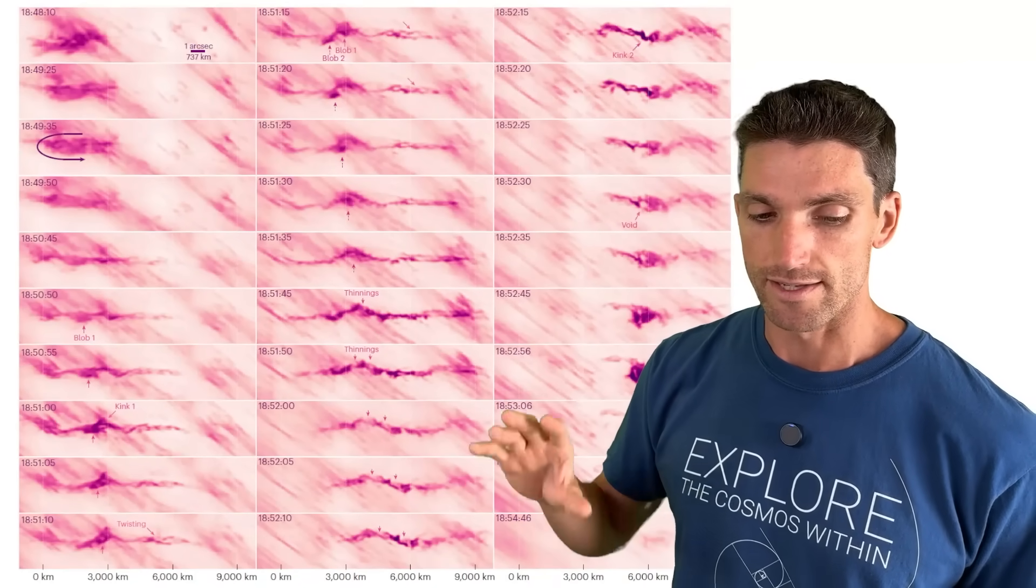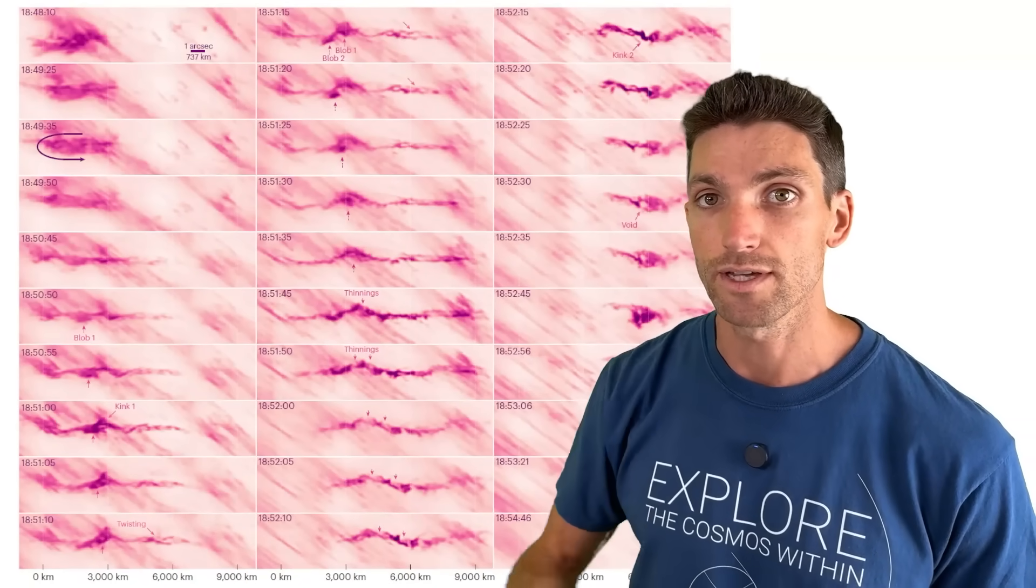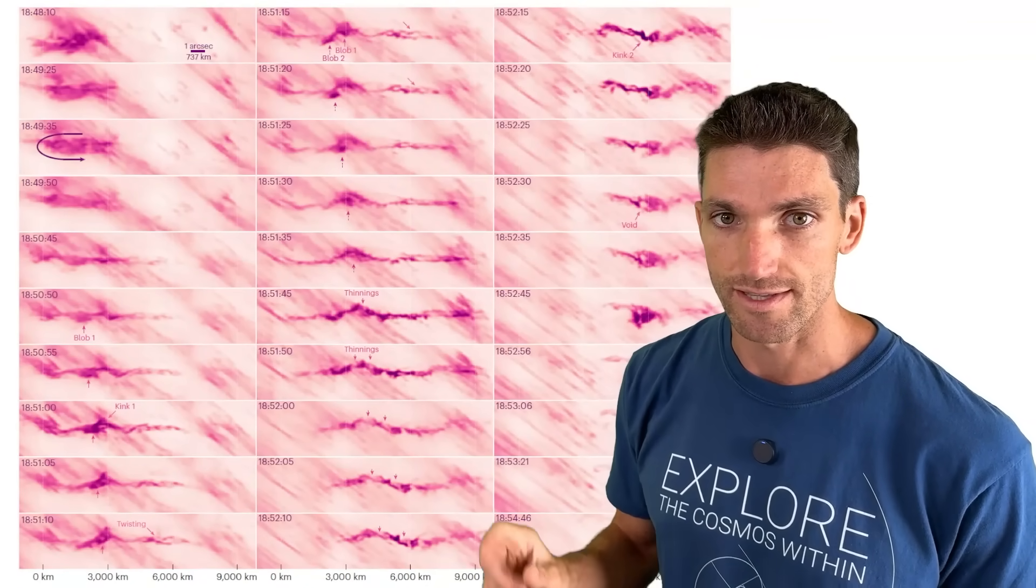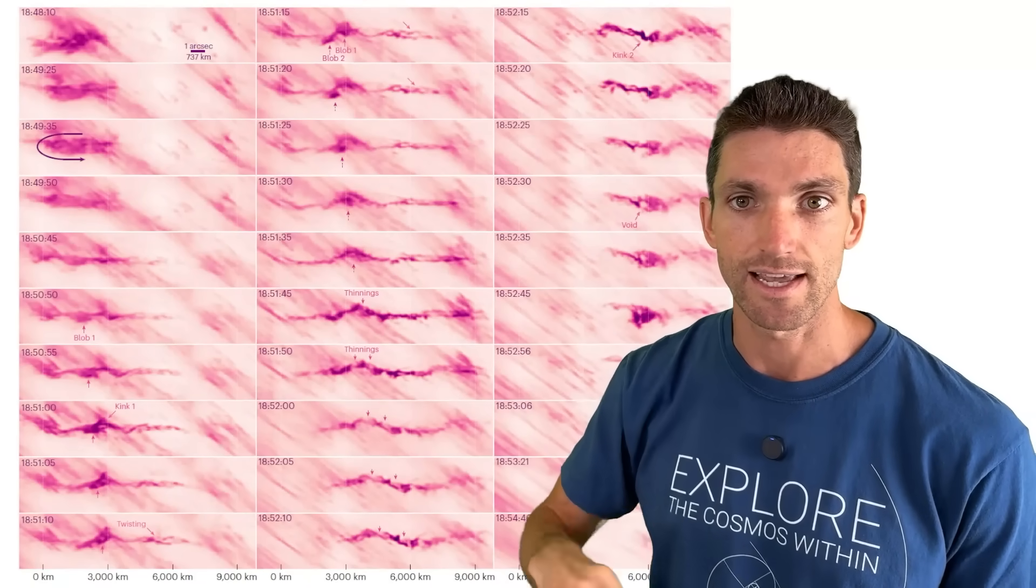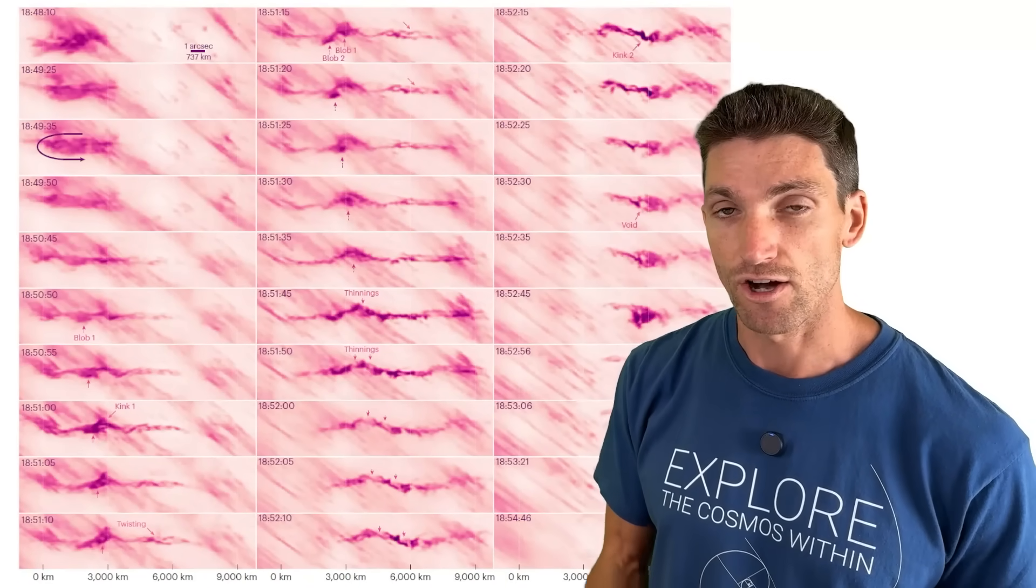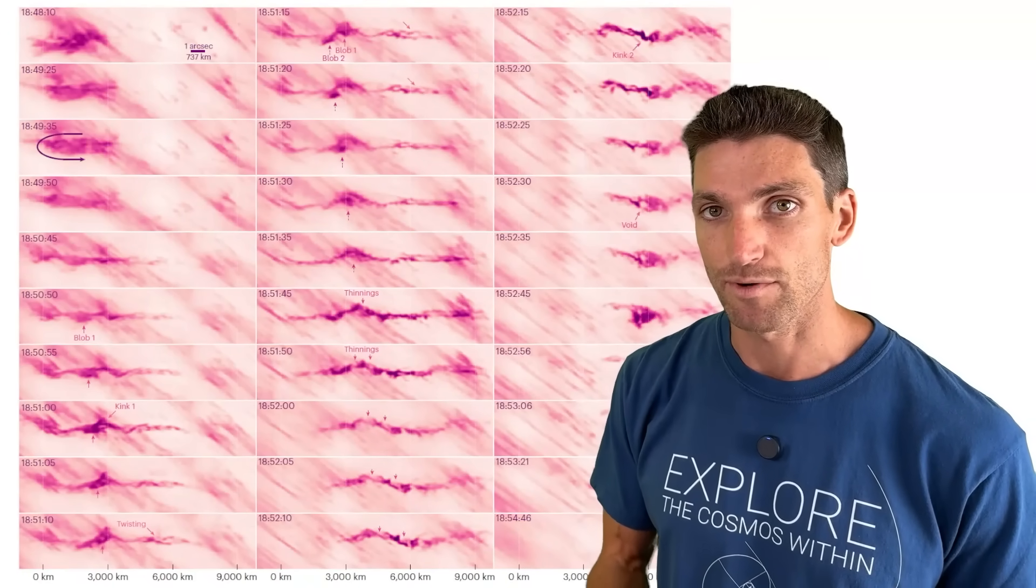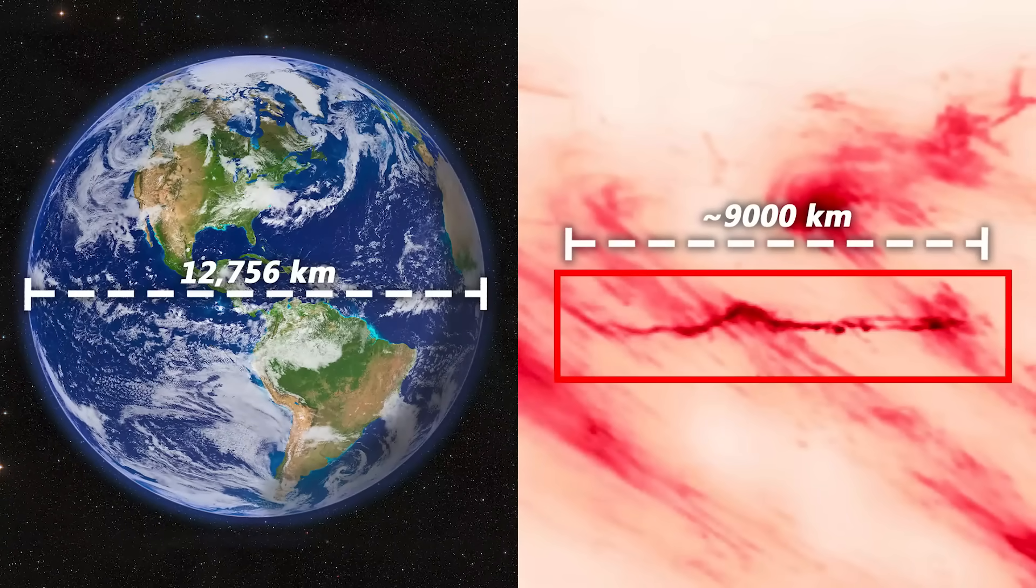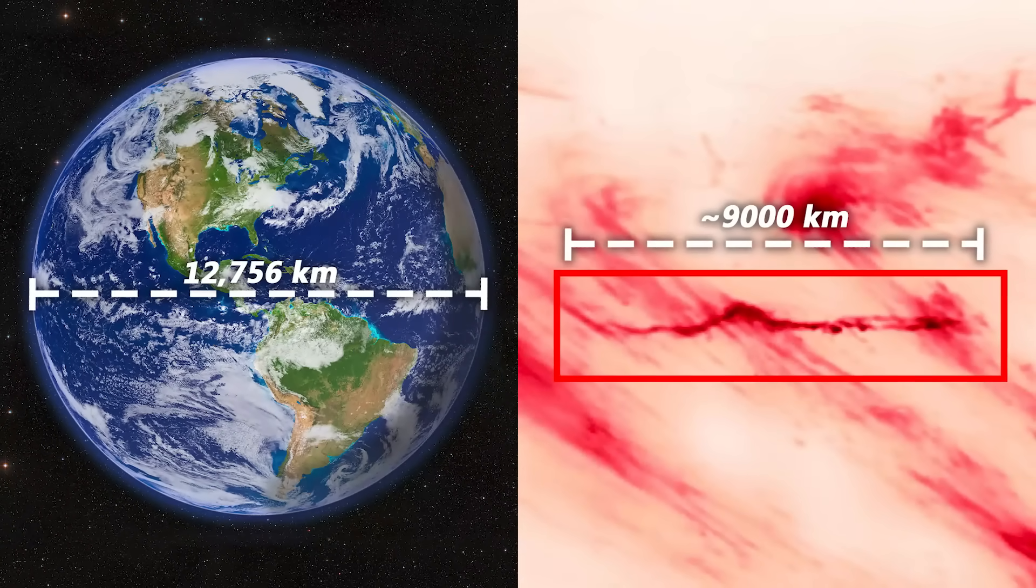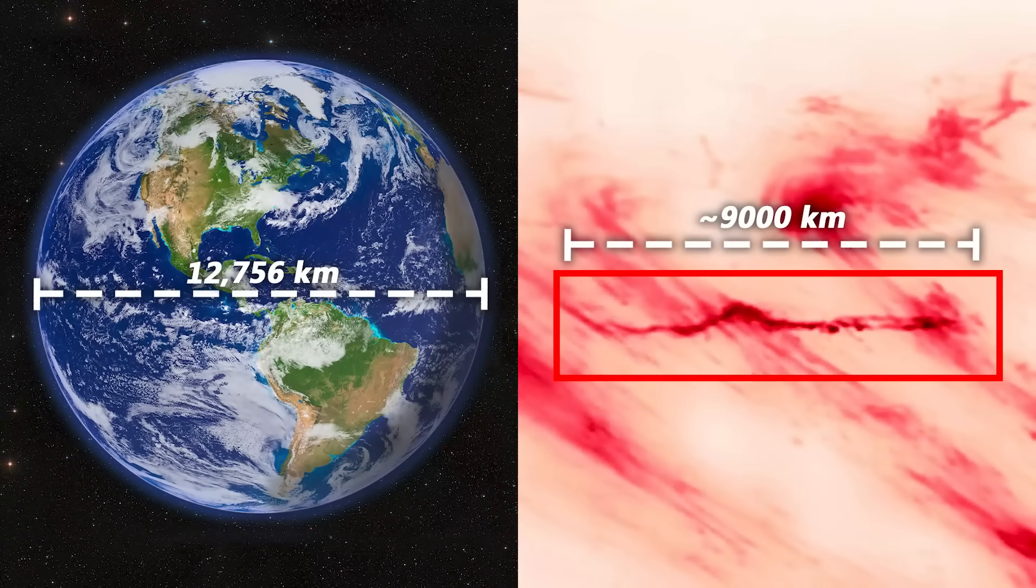Well, I did the math. So the sun is 1.4 million kilometers across. And this is at its greatest extent, let's say 10,000 kilometers. That's 140 times smaller than the diameter of the sun. And in fact, that 10,000 kilometers is almost the diameter of the Earth. It really puts things into context.